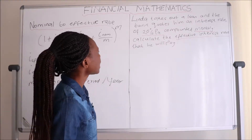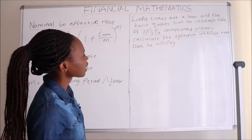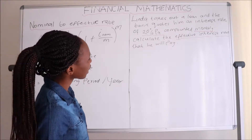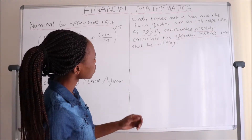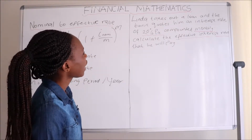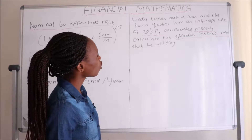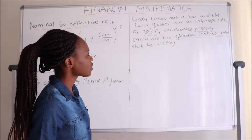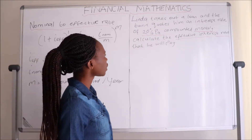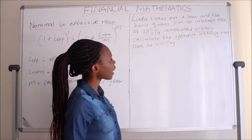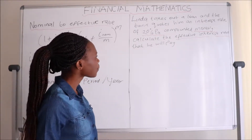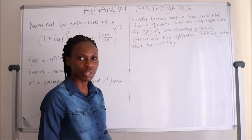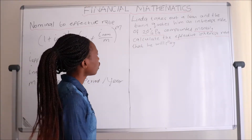The question says: Linda takes out a loan at the bank, and the bank quotes him an interest rate of 20% compounded monthly. Calculate the effective interest rate that he will receive.